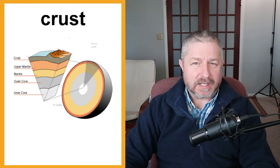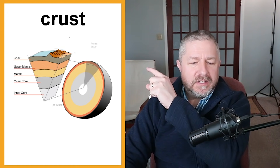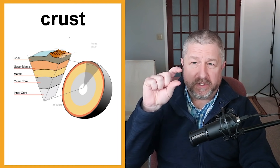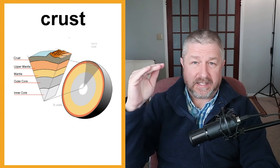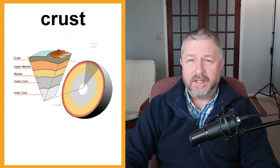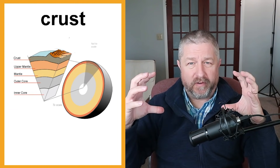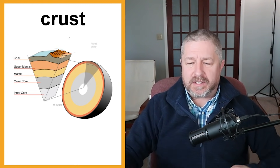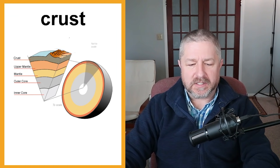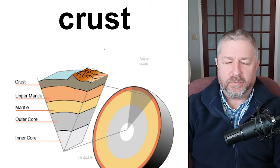Mud is simply dirt, soil, or earth that has gotten very, very wet. This is not a scientific lesson, but the crust of the earth is the very thin top layer of rock and a little bit of soil. The earth has several layers. The top layer that we all live on is called the crust of the earth or the earth's crust — just like the outside of a loaf of bread is called the crust. Let me make this slide bigger so you can see it. The top layer of rock and that little bit of dirt we would call the crust.